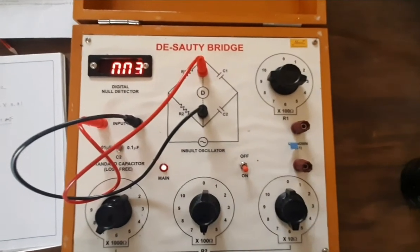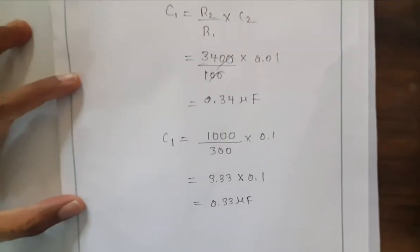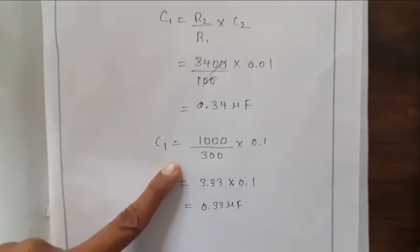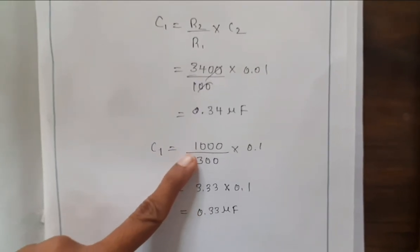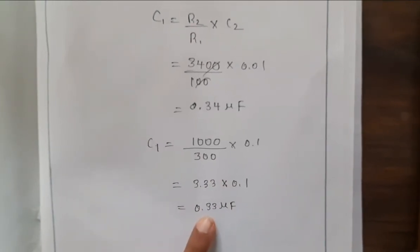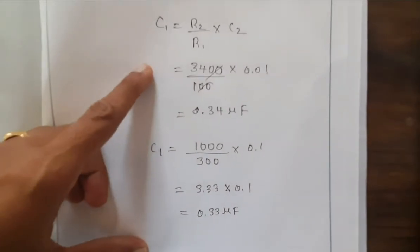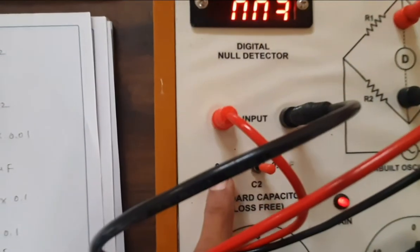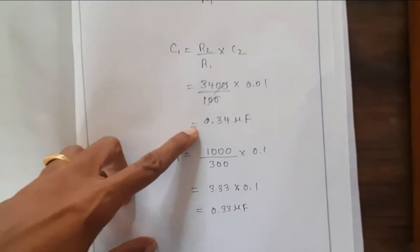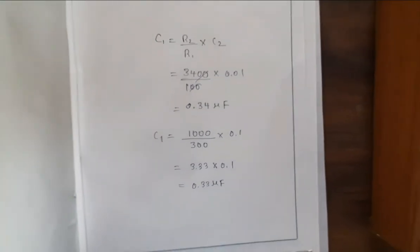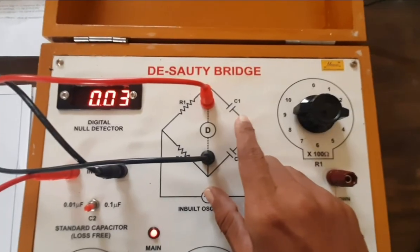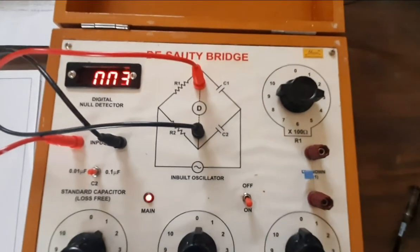Using the same formula C1 = R2 / R1 × C2, substituting 1000 / 300 × 0.1 microfarad gives us 0.33 microfarad. For both cases — C2 at 0.01 microfarad and 0.1 microfarad — we got nearly the same unknown capacitance: 0.34 microfarad and 0.33 microfarad. This confirms the unknown capacitance of the De-Sauty bridge is approximately 0.33 microfarad. That is how you calculate unknown capacitance using the De-Sauty bridge.